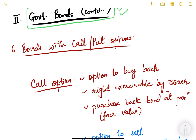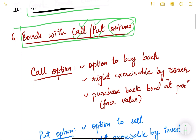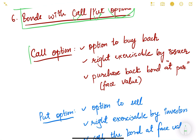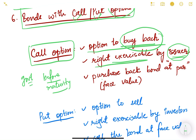Till the previous video we have seen five different kinds of government bonds. Now let us look at the sixth one — bonds with call or put options. Call option is basically an option to buy back. It is a right exercisable by the issuer of the bond. So if the government is issuing a call option bond, the government has the right to call back the bond before maturity and purchase it back at par, meaning at face value.